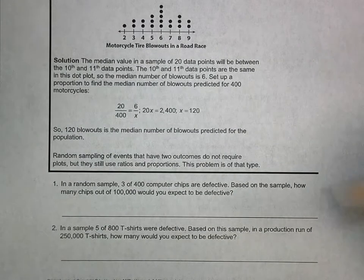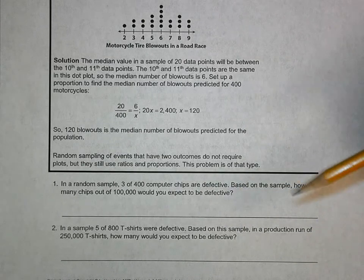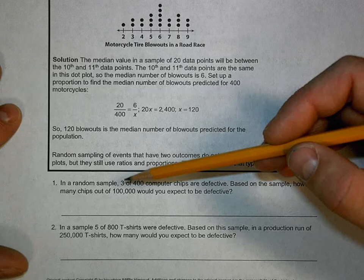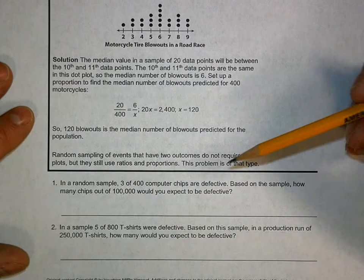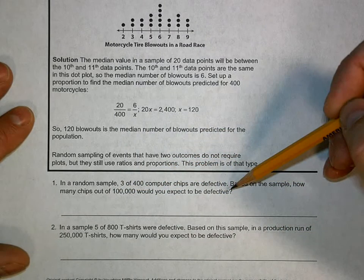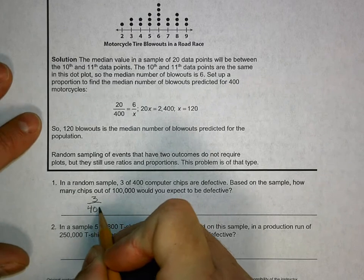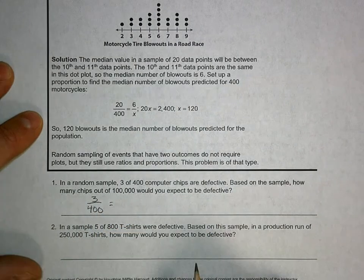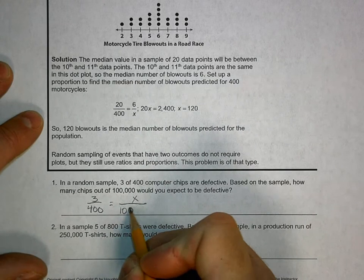Let's look at our examples. We don't necessarily have to use plots. This is basically comparing, making a proportion or percentage. In a random sample, 3 of 400 computer chips were defective. Based on the sample, how many chips out of 100,000 would you expect to be defective?